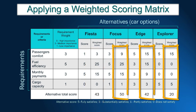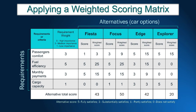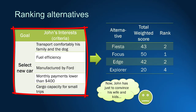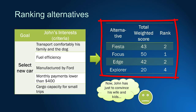Now we can repeat the calculation for the remaining alternatives. The weighted scoring method translates needs and opinions into weighted scores, which helps compare alternatives using numerical values. To recap: needs and interests were translated into requirements; requirements received weights based on importance; the total weighted score was calculated, making it possible to compare and rank alternatives. In this case, we may assume that the Ford Focus is the most suitable for John's needs.